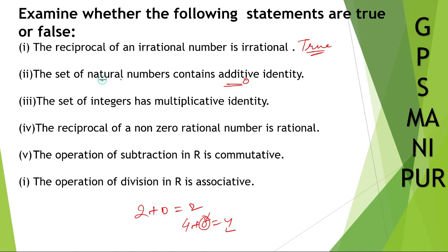Now, the set of natural numbers — what are the natural numbers? The set of natural numbers are 1, 2, 3, 4, and so on. These are called natural numbers. So contains additive identity — is 0 included here? No. So we can say it is false.